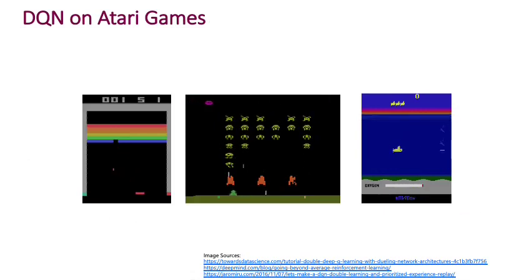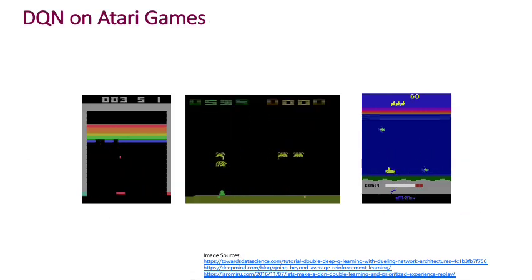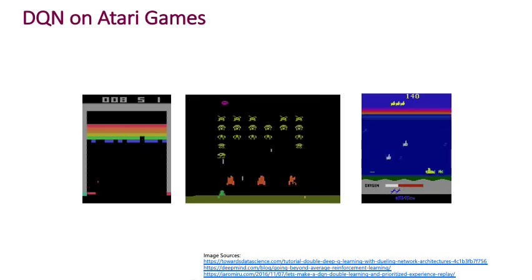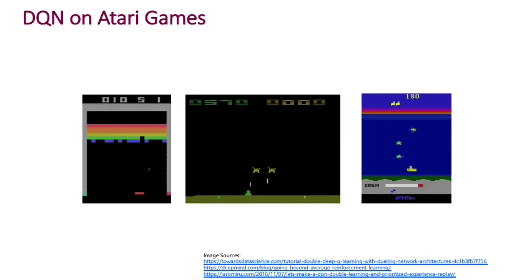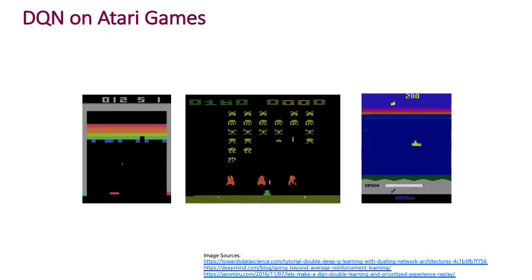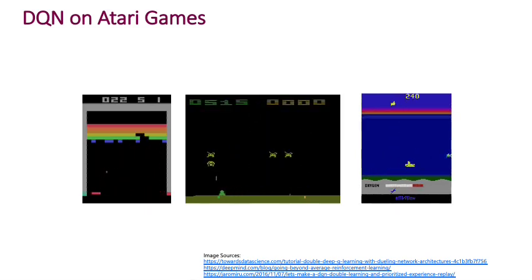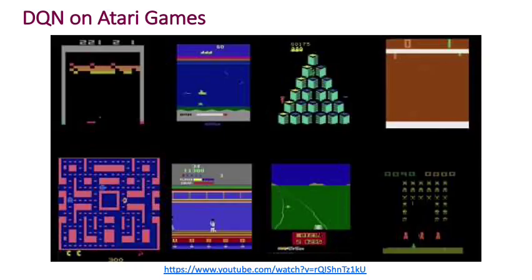And so this approach deep Q learning has worked really well. It made a big splash in 2013 when this algorithm was developed. It was considered a major step forward for reinforcement learning when it was shown that this algorithm can solve a variety of Atari games, like what's shown here. And what was particularly striking about those results was that the very same DQN algorithm was shown to be able to work across a wide variety of games. The same algorithm could play Breakout, it could play Space Invaders, it could play about 50 Atari games.